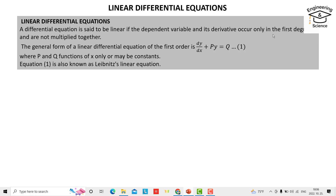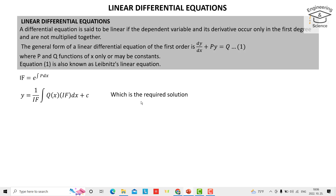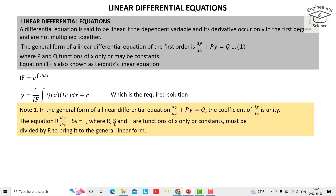You must focus on the condition: variables occur only in the first degree and are not multiplied together. The integration factor needed to solve the equation is e to the power of the integral of P dx, and y equals one over the integration factor times the integral of Q times the integration factor dx plus C. This is the required solution.